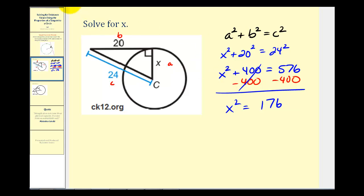Now we'll square root both sides of the equation. Since X is a length we're only going to have the principal square root or the positive value. So we have X equals the square root of 176. Now we should try to simplify this.